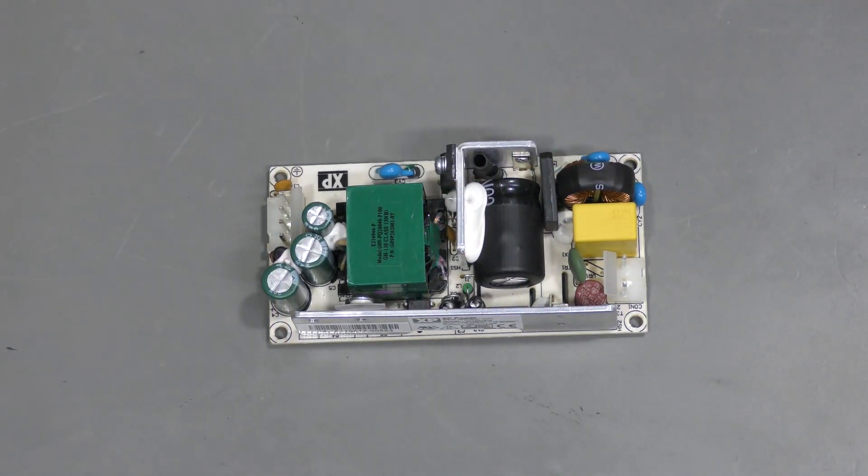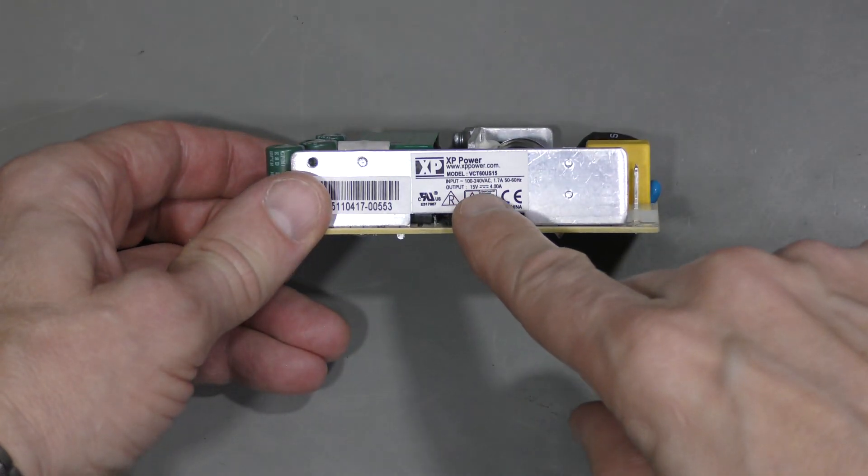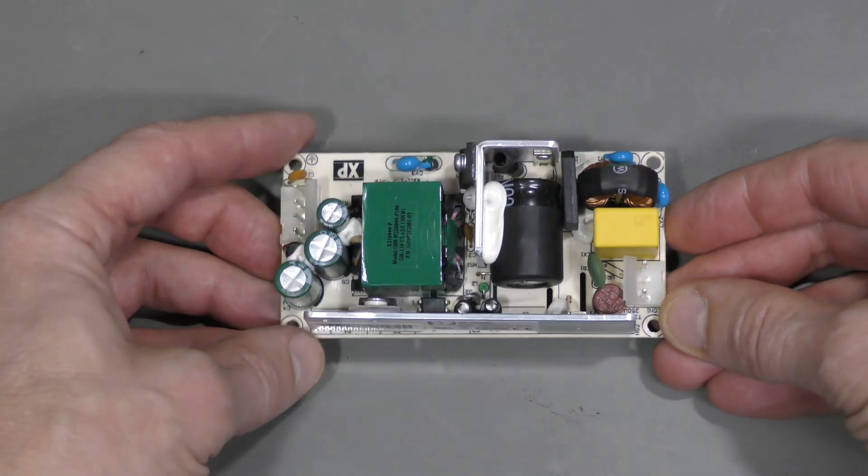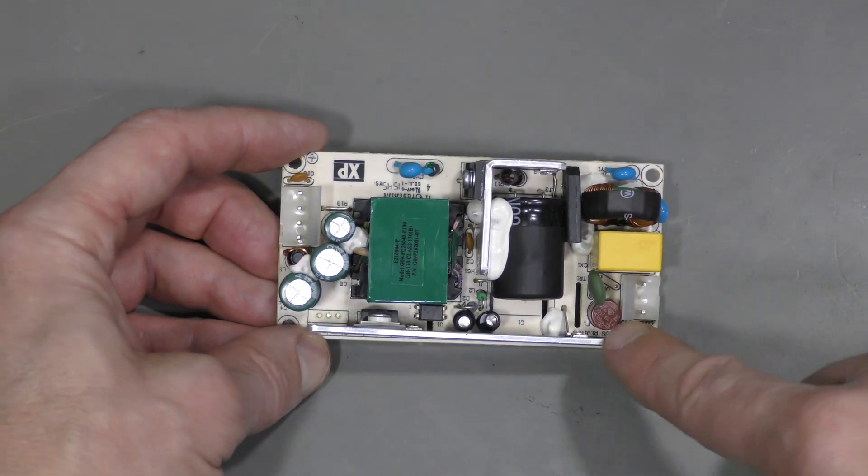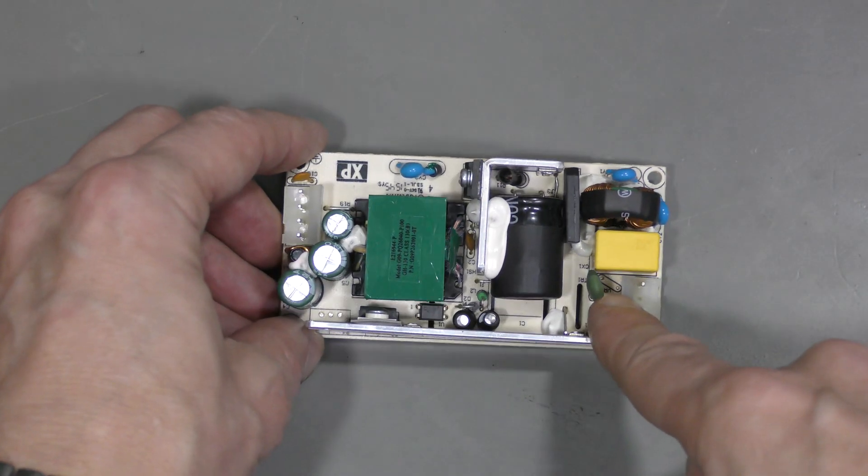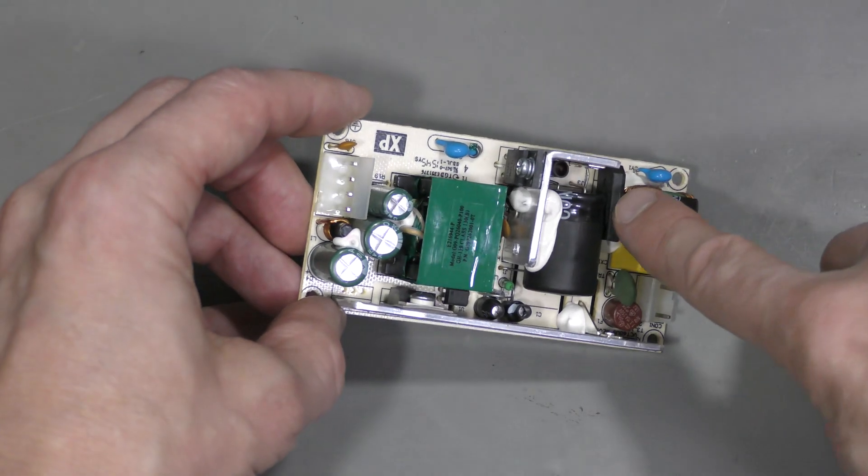Here is the power supply. It turns out it is 15V supply. Here it says output 15V for amps. Seems like a classic switch mode supply. Mains input here, fuse, PTC, varistor is not populated for some reason. Filtering here, bridge rectifier, capacitor,